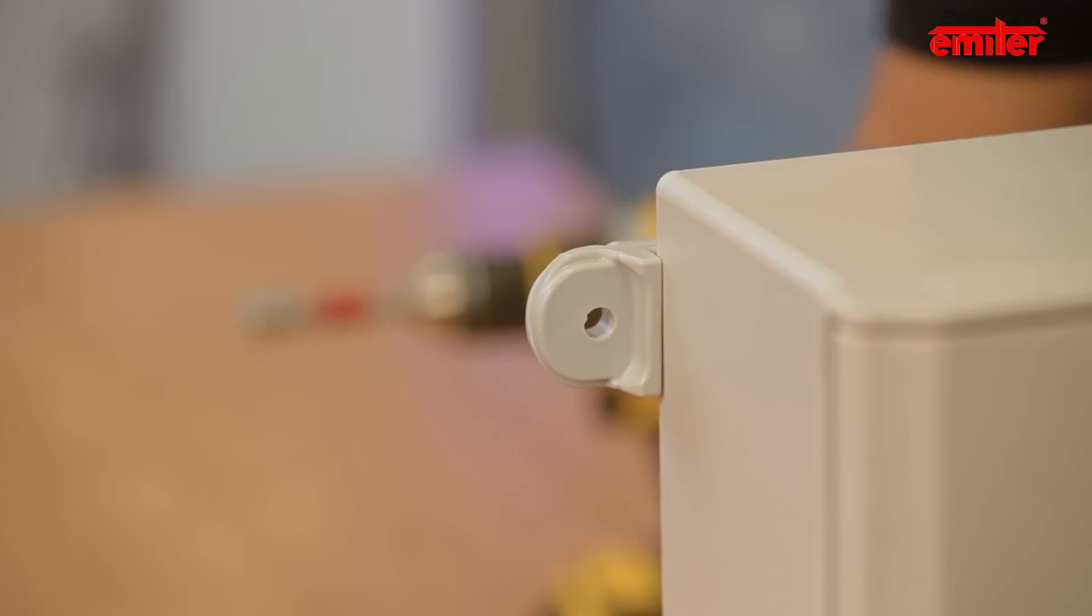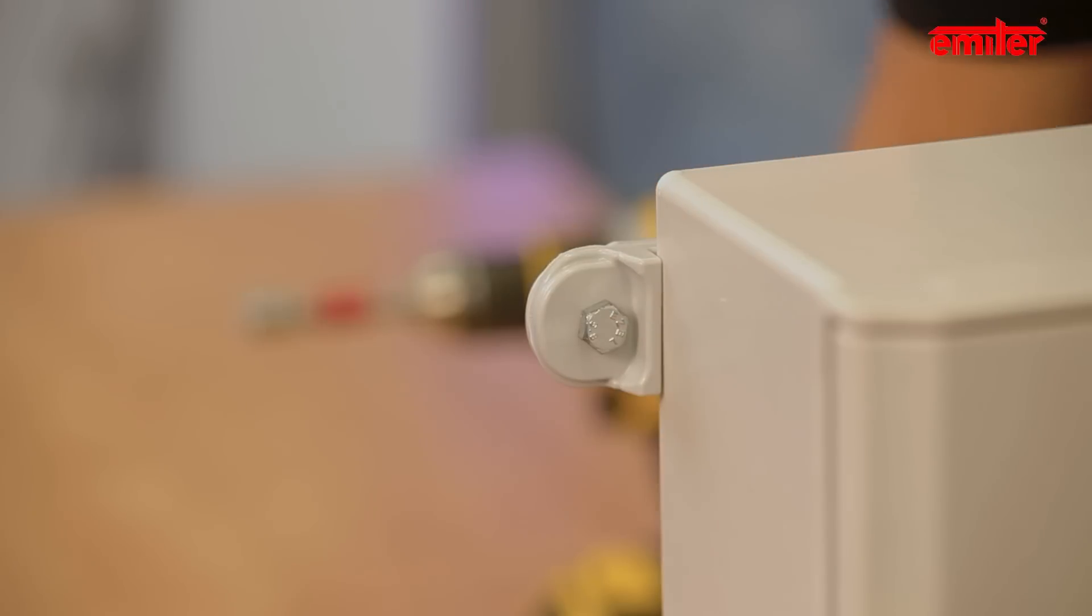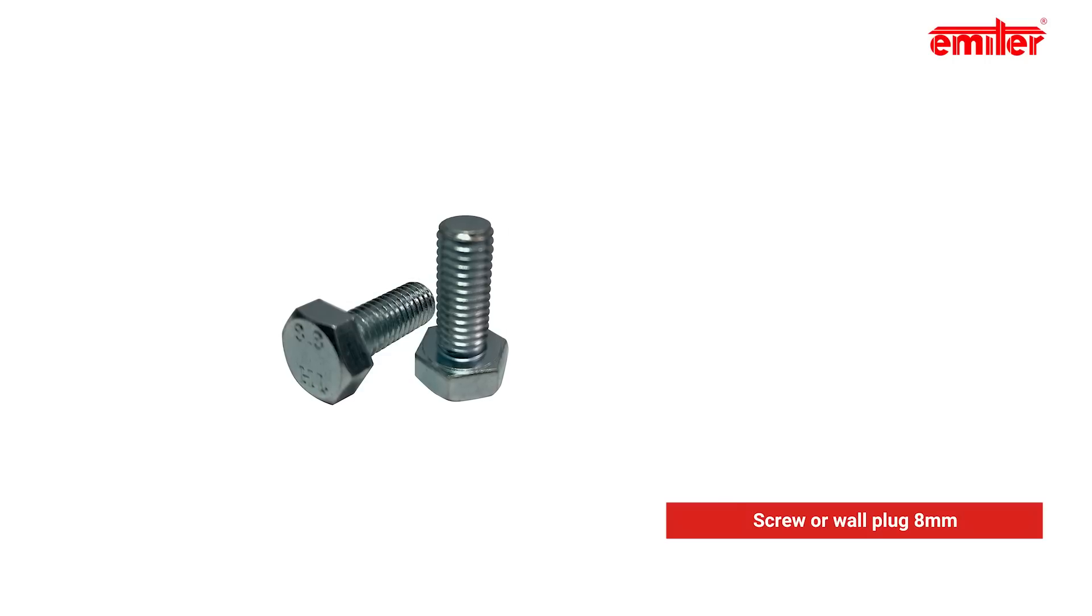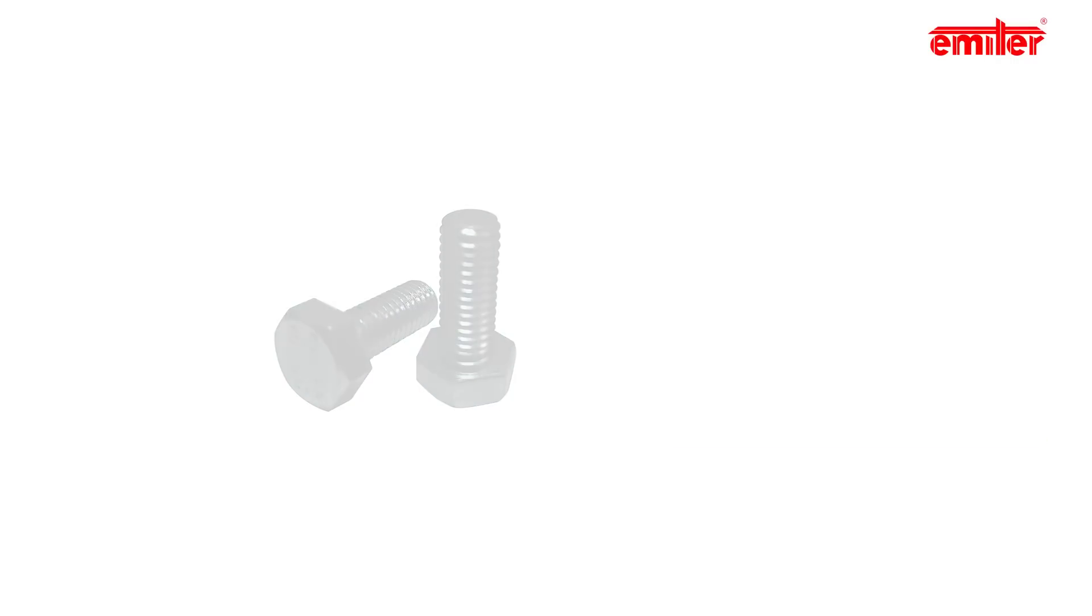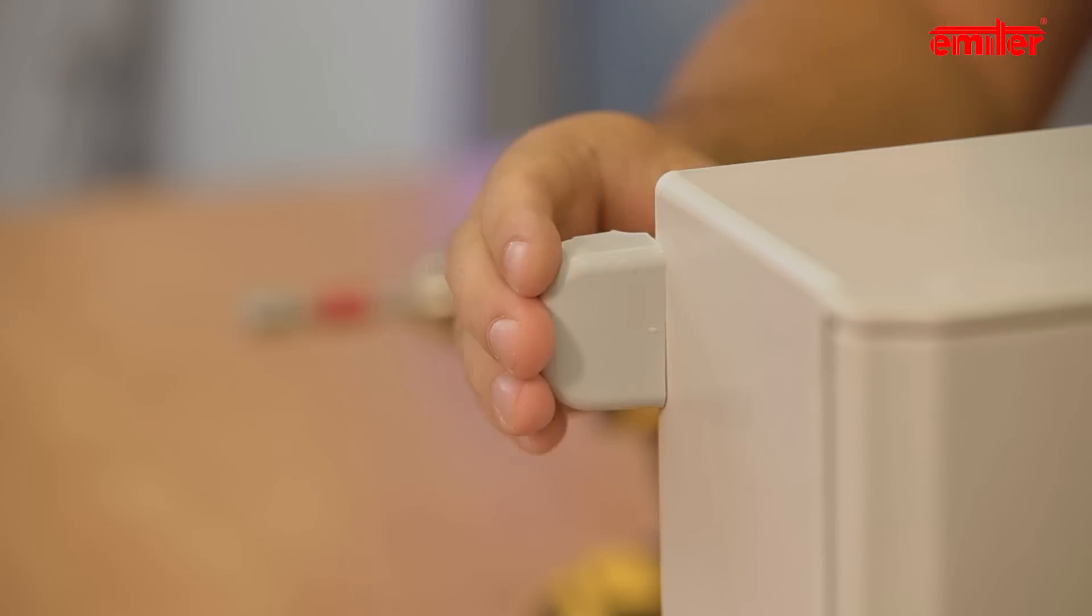Holders are installed. Now we need to remove the plugs and assemble it to the wall or frame construction. The hole in the UMWK holder allows to use screws or wall plugs with a diameter of 8 mm. After enclosure installation, cover the visible part of the holders with the plug.